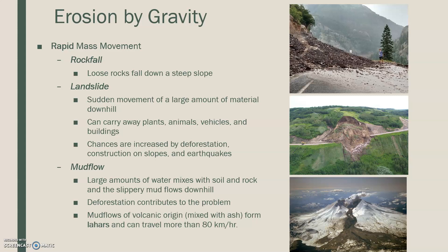Chances of a landslide are increased by deforestation, taking away trees, construction on sloped materials, and of course earthquakes — very commonly earthquakes. The third type is a mud flow: large amounts of water mix with soil and rock, and the slippery mud flows down the hill. Deforestation often contributes to this because trees help create thickness to the soil, and without them you often have runny soil. A specific mud flow caused by a volcano mixes with ash and forms what's known as a lahar, which can travel over 80 kilometers per hour.